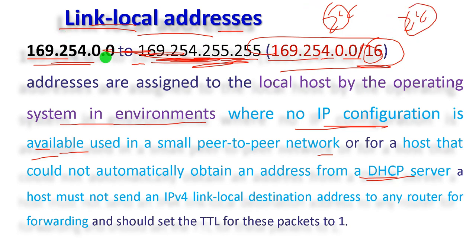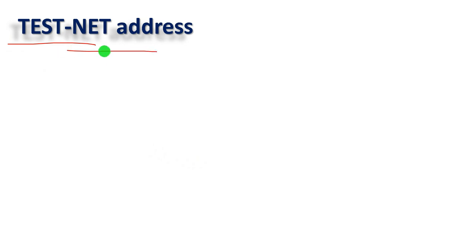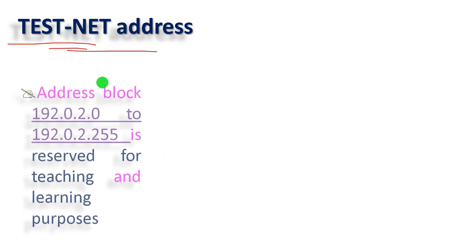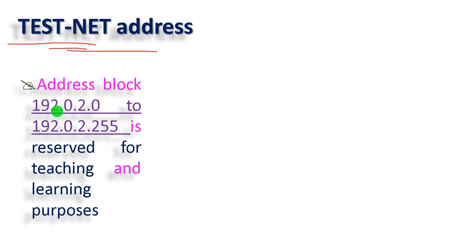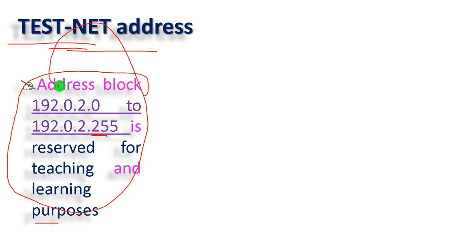There is also an address reserved for teaching and learning — especially for universities or any other educational system. The range is 192.0.2.0 to 192.0.2.255. This is reserved for documentation purposes and network testing.